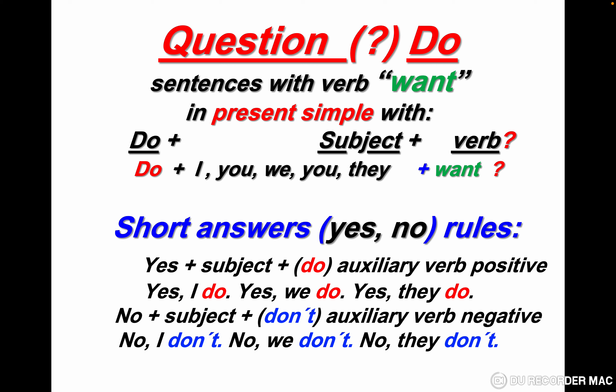In this lesson we are going to have questions with do, with the verb want, and we are going to see short answers with subjects like I, you, we, they. The rule is do plus subject plus verb: do I want? Do you want? Do we want? Do they want? Short answers yes/no rules — yes plus subject plus do: yes, I do; yes, we do; yes, they do. Negative form — no plus subject plus don't: no, I don't; no, we don't; no, they don't.